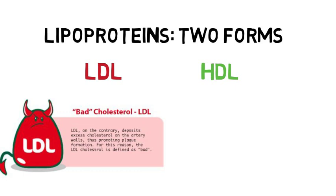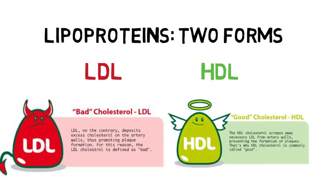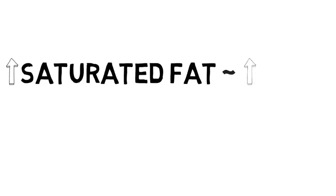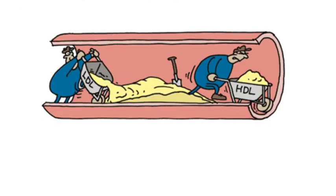LDLs carry the majority of the cholesterol in our bodies and are typically considered the bad type of cholesterol. This is because high levels of LDL particles can invade blood vessels and can cause inflammation. HDLs, on the other hand, are often referred to as good cholesterol because they can absorb cholesterol molecules and carry them back to the liver, which flushes the cholesterol from the body and may reduce the risk of heart disease and stroke. A diet rich in saturated fats can drive up total cholesterol and tip the balance towards more harmful LDL cholesterol, which may prompt blockages to form in arteries in the heart and elsewhere in the body.